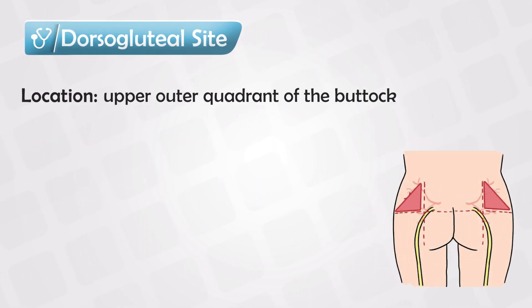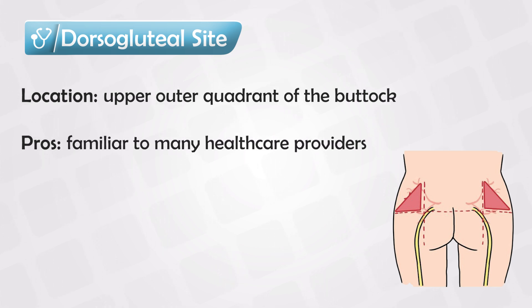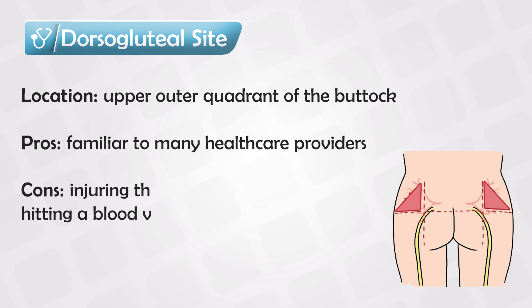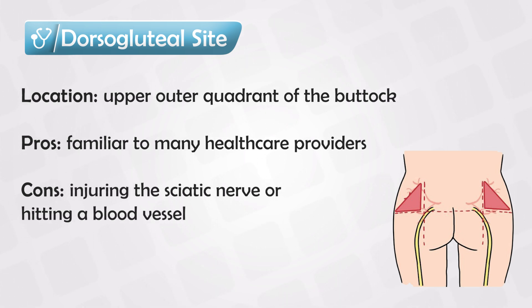And of course, we have to mention the gluteal injections themselves. We have the dorsogluteal site, which is the most commonly used. We simply divide the gluteal area into four quadrants and inject into the upper outer quadrant. This is familiar for many healthcare workers, but there is a risk of injuring the sciatic nerve.